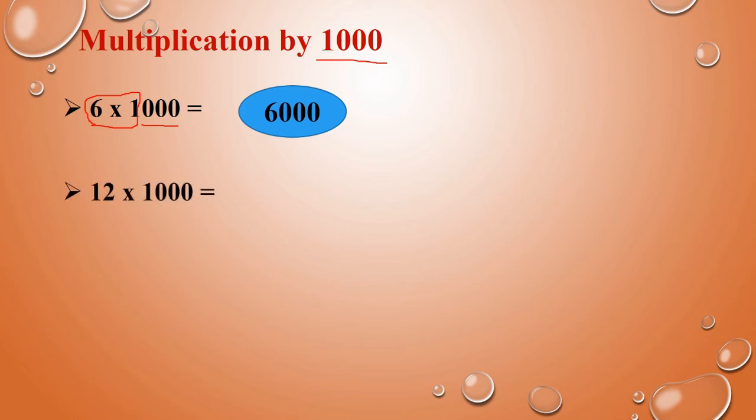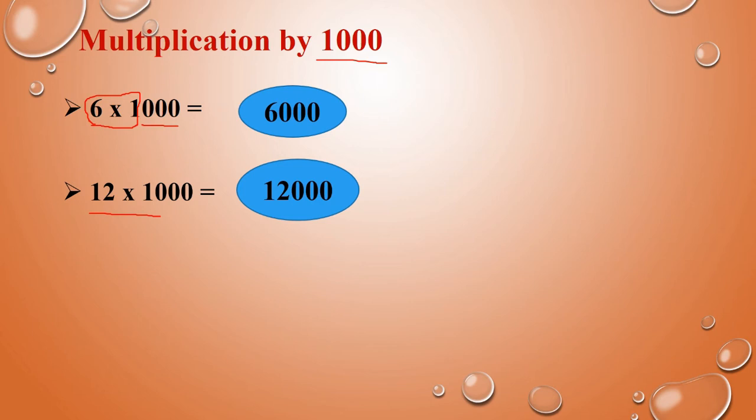Next: 12 into 1000. Same way — 12 into 1, that is 12. Add 3 zeros. So the answer is 12,000.